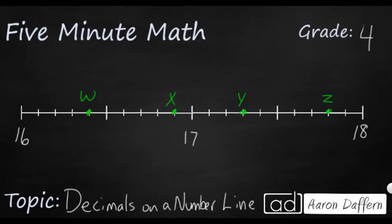You see a number line that is not a complete number line starting from zero. It starts at 16, moves all the way up to 18. We have four points along the number line, W, X, Y, and Z. And what we need to do is, starting in fourth grade, we need to start thinking of units that are smaller than one.